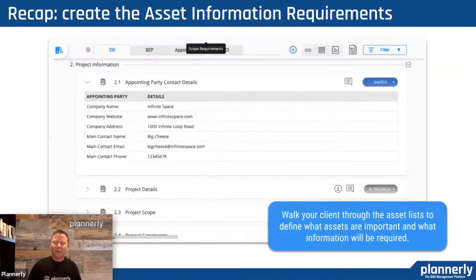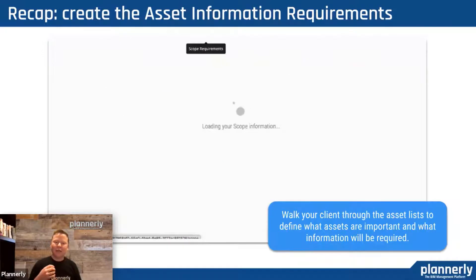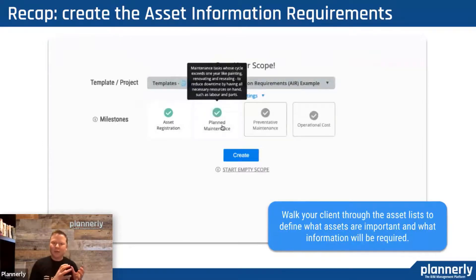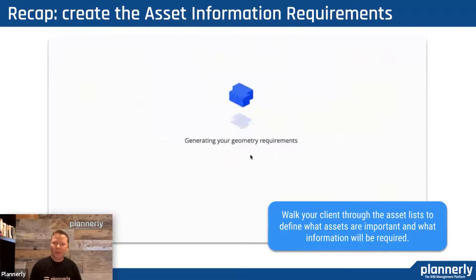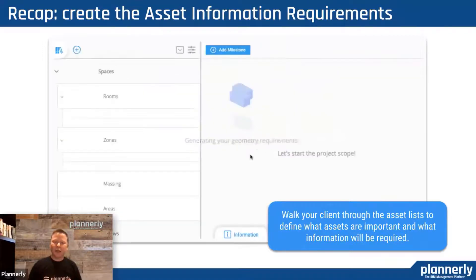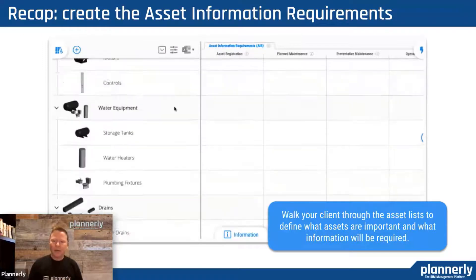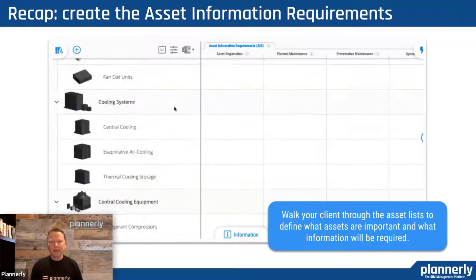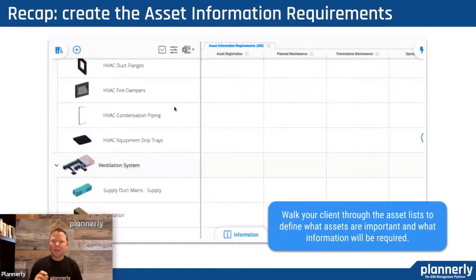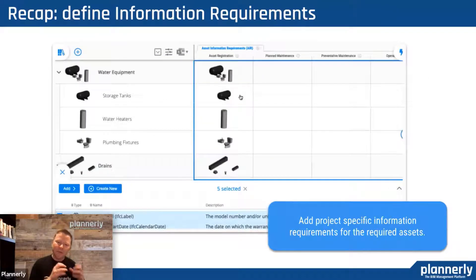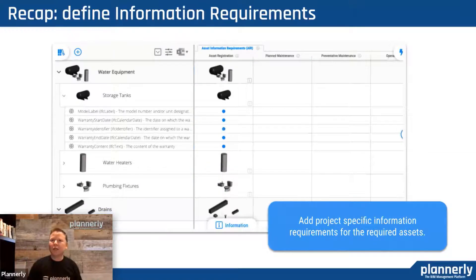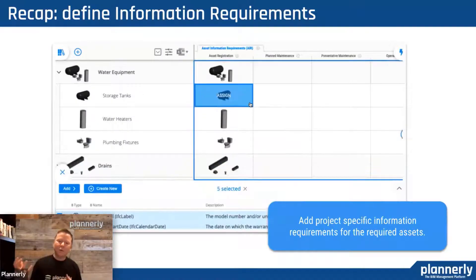We looked at how we can, in the scope, assign specific asset information requirements for each of the purposes. This was defining our asset registration — what needs to be registered in the maintenance records, what needs planned maintenance, preventative maintenance. And then we looked at how we can assign specifically information requirements. I see somebody asking a question about COBE — this is really the connection between the framework that is COBE for outputting.